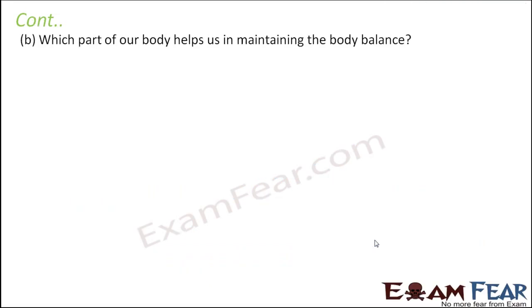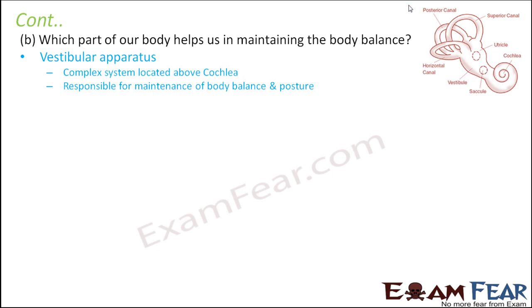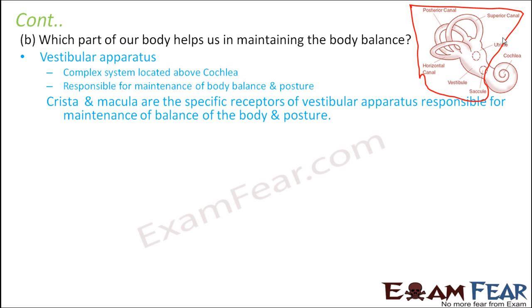Which part of our body helps us in maintaining body balance? The vestibular apparatus does that. It is a part of the inner ear located just above the cochlea, and it is responsible for maintenance of body balance and posture. The vestibular nerve connects it to the brain and sends information regarding body balance. The specific receptors of the vestibular apparatus are crista and macula — crista is the ridge present near the semicircular canals, and macula is the ridge present near the utricle and the saccule.